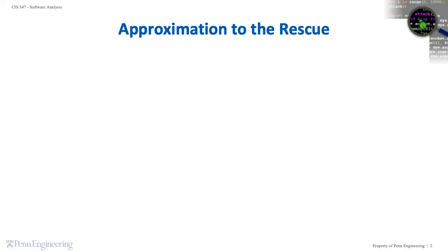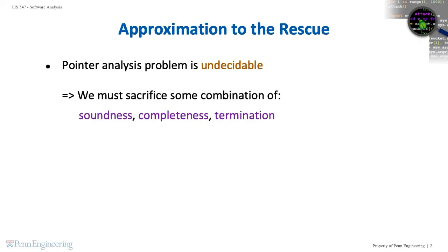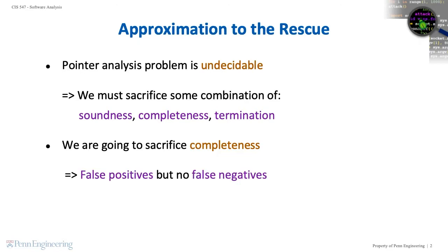Recall that data flow analysis in the absence of pointers was undecidable. It follows that the problem of deciding whether two pointers alias is also an undecidable problem. There is no algorithm that always terminates and perfectly decides whether two pointers alias. In order to create a feasible analysis, we must sacrifice either soundness, completeness, or termination. As we did for data flow analysis, we decide to sacrifice completeness. This means in exchange for the possibility of obtaining false positives, we can design an alias detection algorithm that terminates and never gives false negatives.